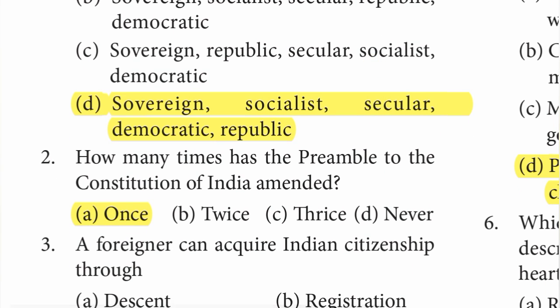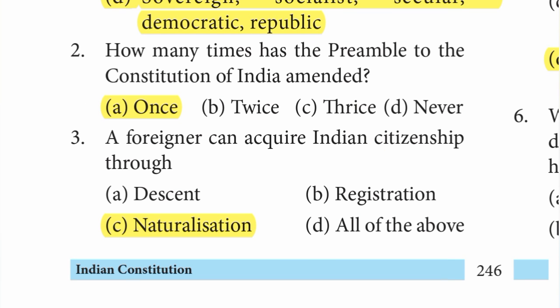Second: how many times has the preamble to the Constitution of India been amended? The answer is A option — once. Third one: a foreigner can acquire Indian citizenship through — the answer is C option — naturalization.